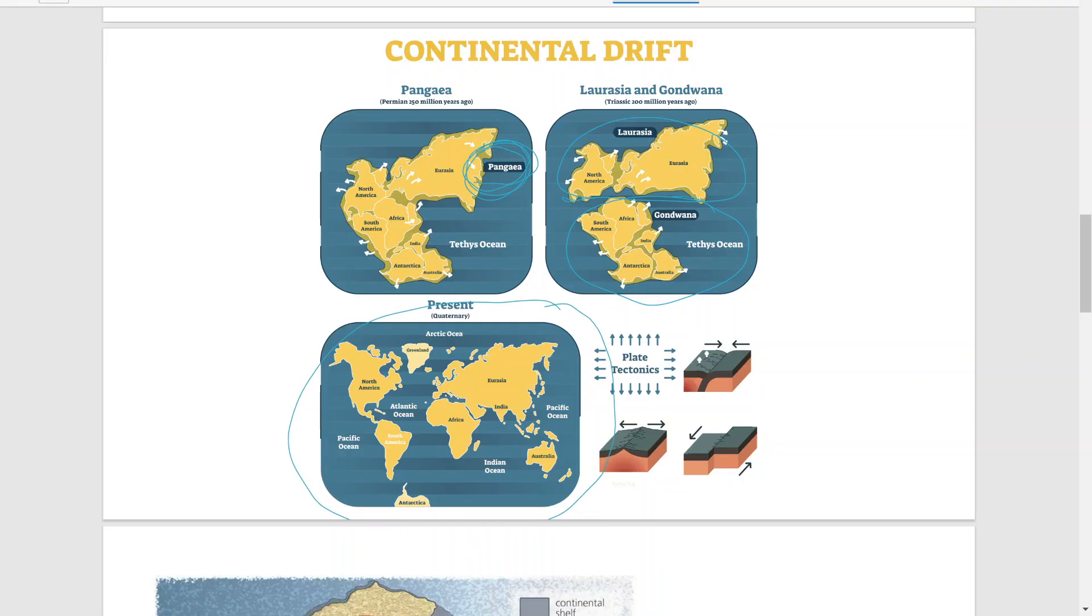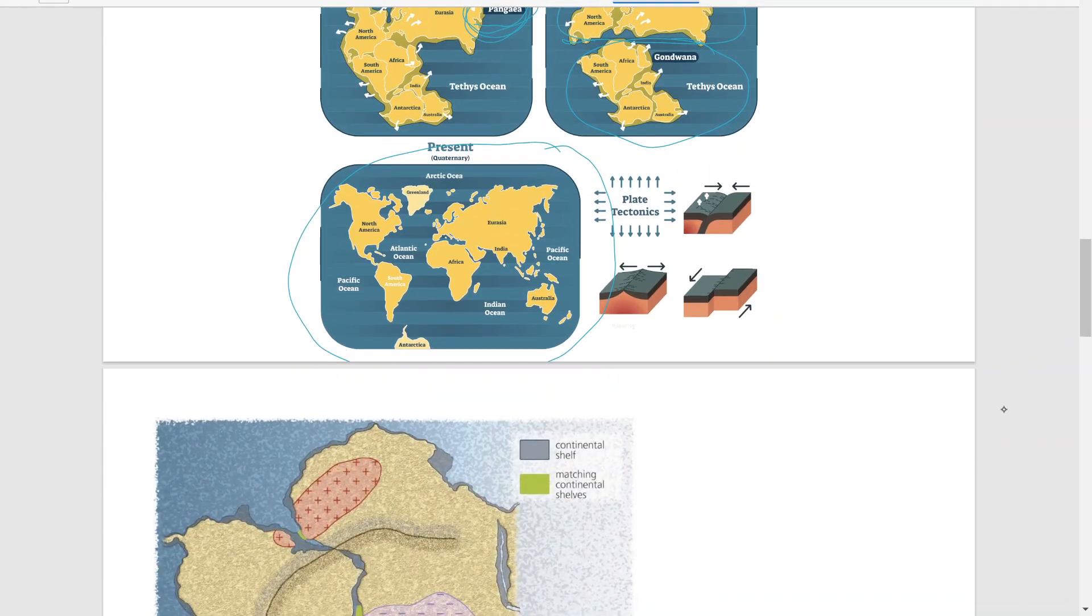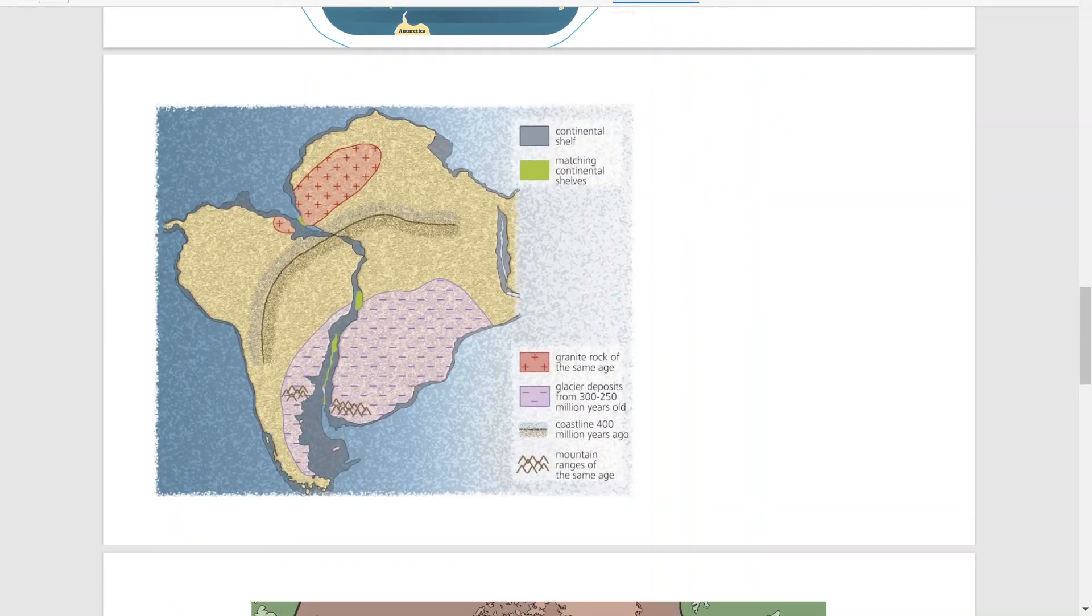And they formed the continents as we know today. As we go into the future, the modern day continents are going to move as well. In a couple of million years time, we're going to have a completely different look to the continents on Earth. Now, the question then is how did Alfred Wegener actually figure this out?